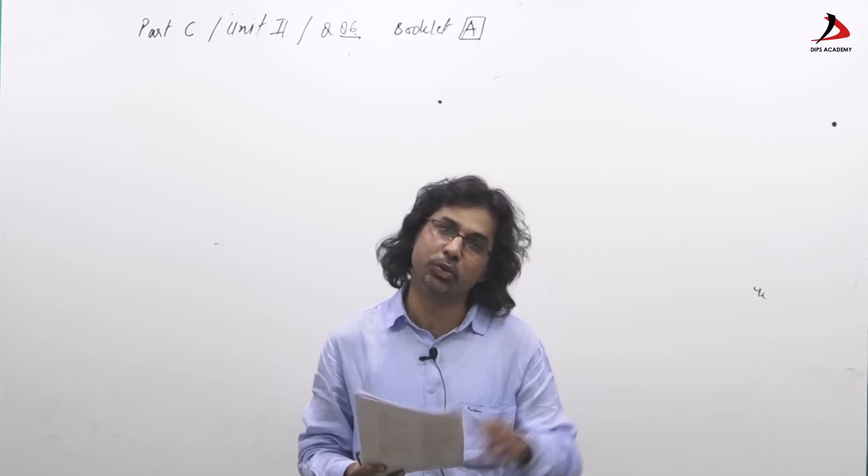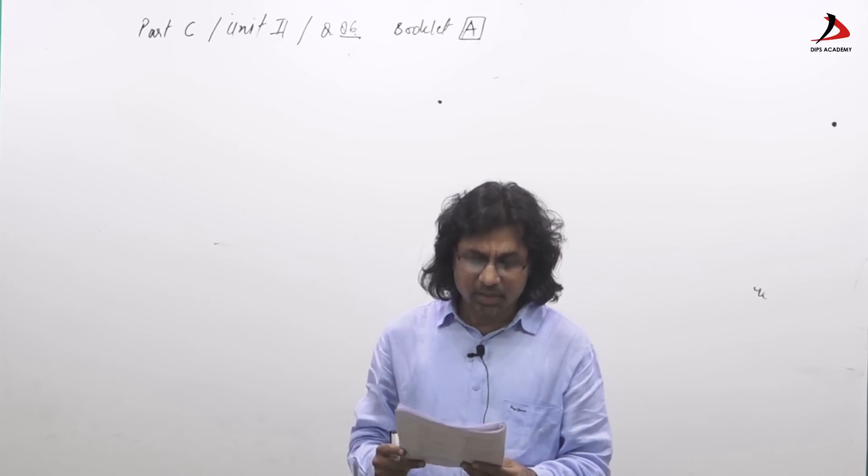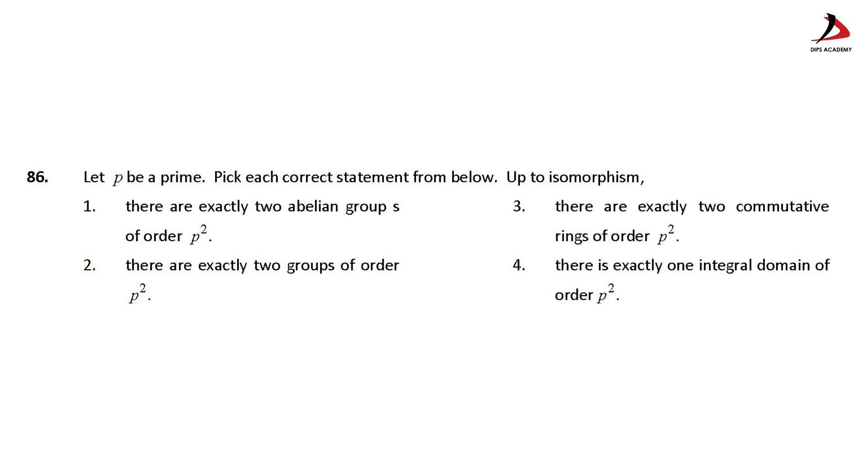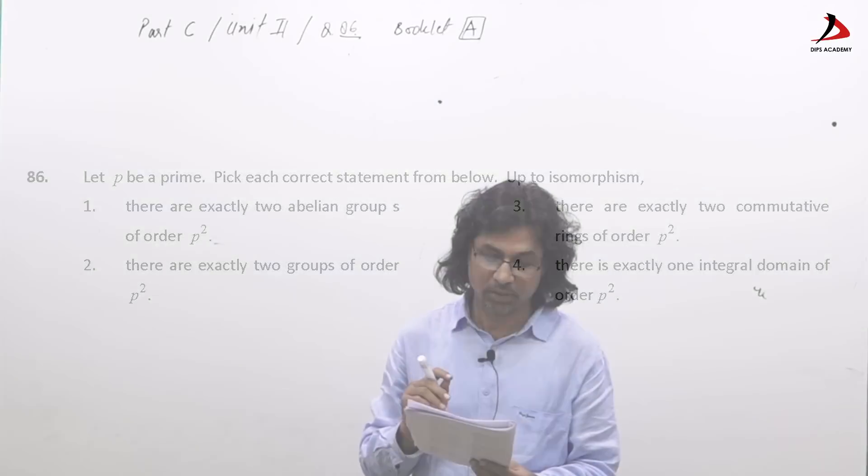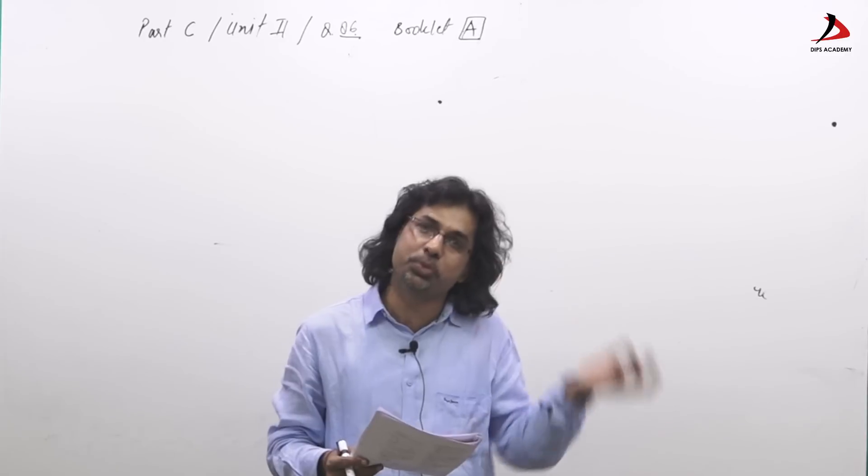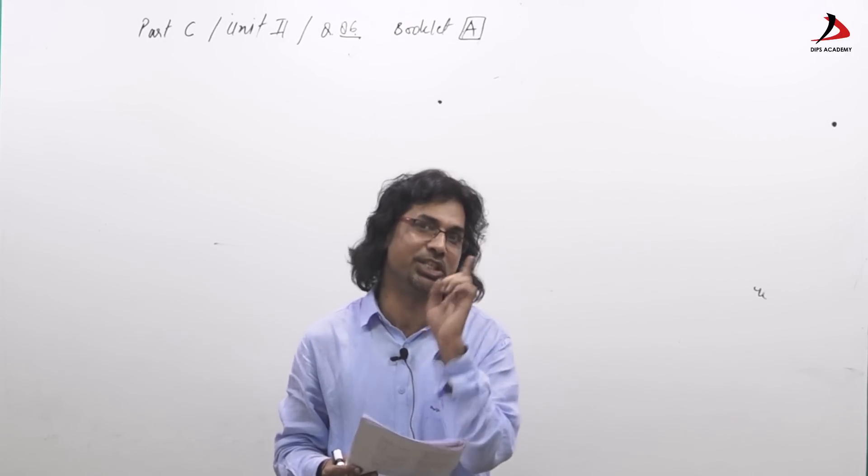It is like two options are on groups and two options are on rings. I just read out the question: let P be a prime, pick each correct statement from below up to isomorphism. We have to select four options that is talking about groups or rings up to isomorphism of a particular order that is P square.